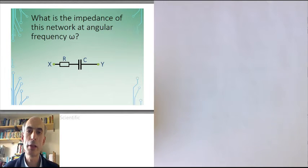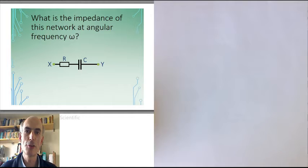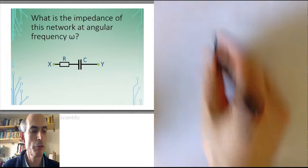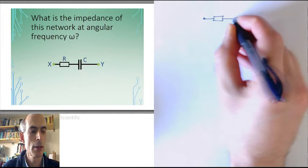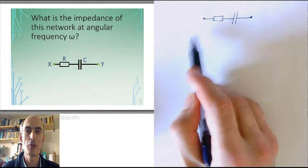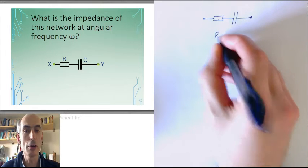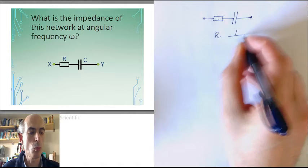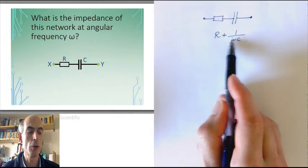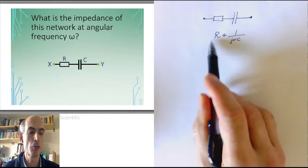For resistors, the complex impedance is perfectly real. For capacitors and inductors, the complex impedance is purely imaginary. However, if you start combining these components, you can end up with networks which have a complex impedance that is neither purely real nor purely imaginary, but complex. For example, with two components in series — a resistor and a capacitor — a resistor has a complex impedance of R, and a capacitor has a complex impedance of 1 over jωC. So the total complex impedance across this network would be R + 1/(jωC), which is complex: it has both a real and an imaginary component.